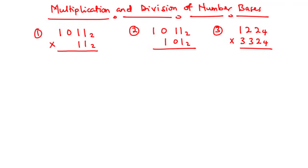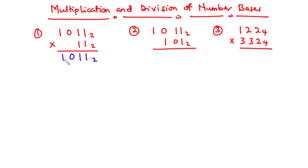For example 1, we have 1011 base 2 times 11 base 2. Now, let's multiply. 1 times 1 is 1. 1 times 1 is 1. 1 times 0 is 0. And then 1 times 1 is 1.